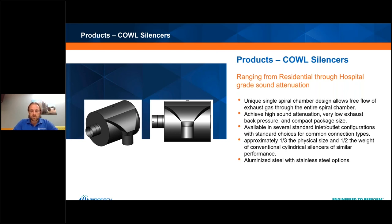In addition to our EM silencer line, we also have our Cowell silencer line. These silencers are small but incredibly robust. Inside is a unique spiral chamber that allows a very high level of sound attenuation with very low back pressure. They're about a third of the size of a cylindrical silencer and about half the weight, with similar performance — very advantageous where space or weight is a concern. These are great for any application with limited space, and we move a lot of these in the marine market as well as backing truck applications.